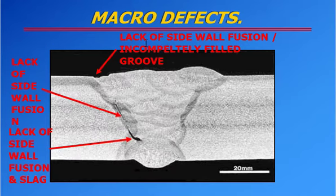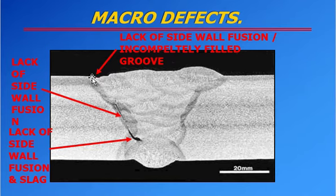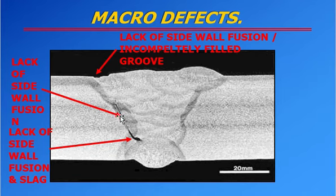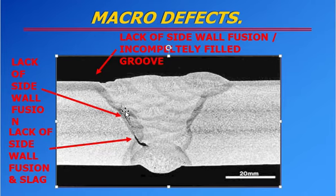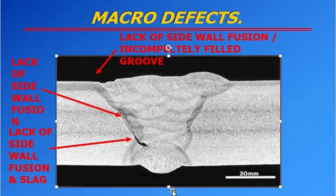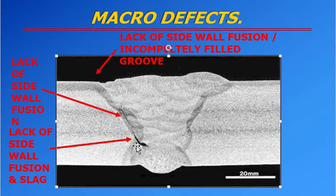You can see lack of sidewall fusion. The sidewall is the parent metal wall, and fusion is not achieved there. Also visible is an incomplete groove — the weld metal is not deposited properly. In another area, you can see lack of sidewall fusion and slag. The electrode did not properly melt and fuse the joint base metal and weld metal. Slag is present, which is beyond the acceptance criteria and therefore rejected. So this is lack of sidewall fusion with slag — rejected.